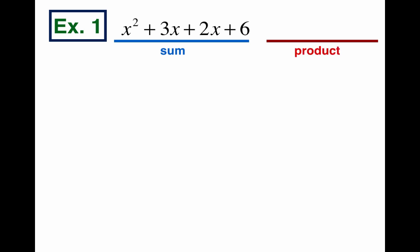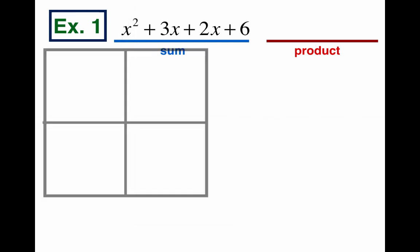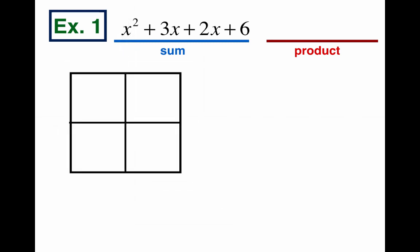So we're kind of doing the reverse of what we've practiced in class before. We're going to have this rectangle, but instead of knowing what the outside length and width are, we actually know what the inside is. We know that there's an x squared, a 3x, a 2x, and a 6, and I'm going to put the x squared and the 6 across from each other, and I'm going to put the 3x and the 2x across from each other.